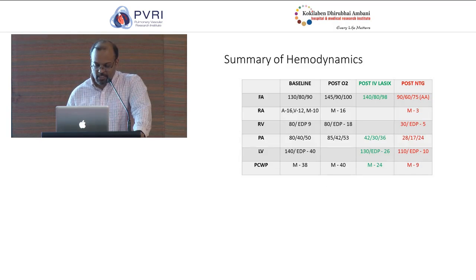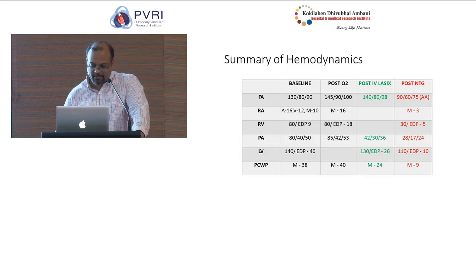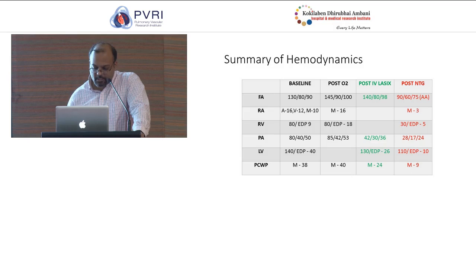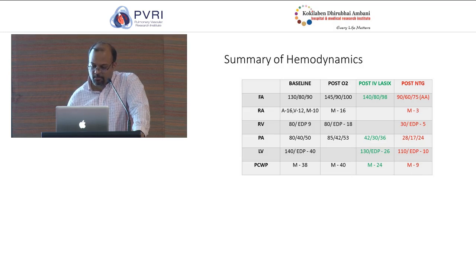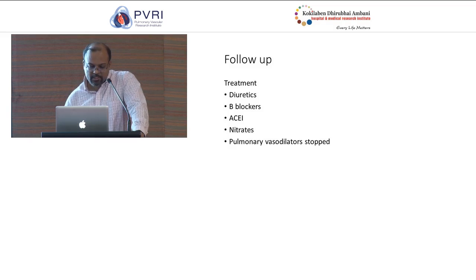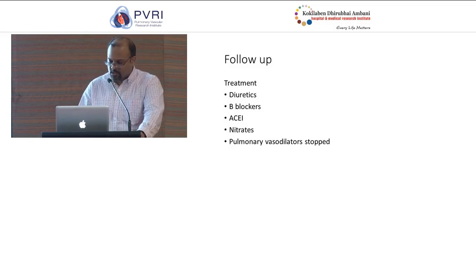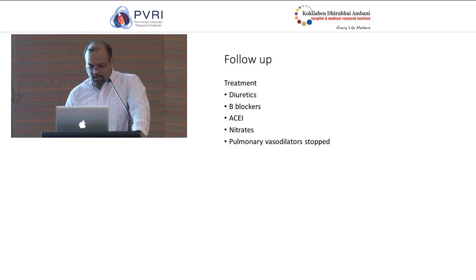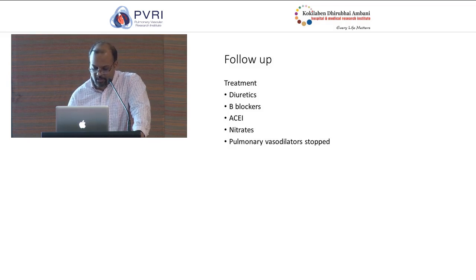Comparison of RV and LV pressures showed ventricular concordance, with no equalization of diastolic pressures, ruling out constrictive pericarditis. A pullback from LV showed a gradient of around 18 mmHg with no significant LV outflow tract obstruction. In summary, from baseline on IV furosemide and NTG, pulmonary artery pressures dropped from 80/40 mean 50 to almost normal, and end-diastolic pressures and PCWP also normalized. He was started on diuretics, beta blockers, ACE inhibitors, and nitrates. Pulmonary vasodilators were stopped as it was post-capillary pulmonary hypertension, and he continued CPAP therapy at night.